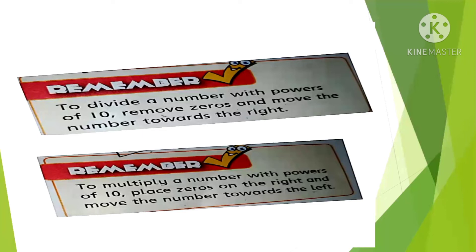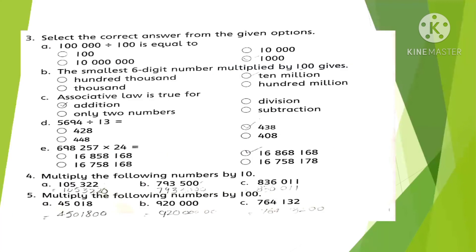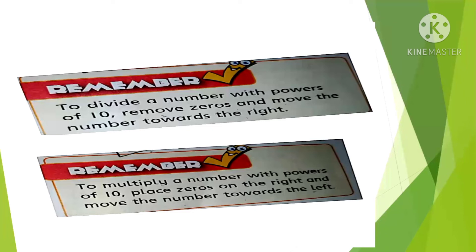Before starting Exercise 1C, here are some rules for multiplication and division by powers of 10. To multiply a number by a power of 10, place zeros on the right and the number moves left. To divide a number by a power of 10, remove zeros from the right and the number moves right — meaning you cancel one zero when dividing by 10.